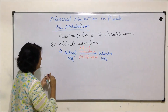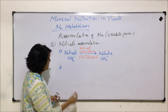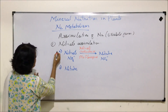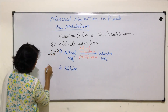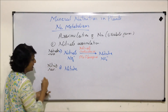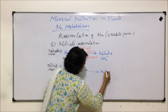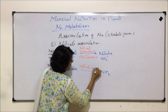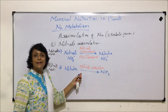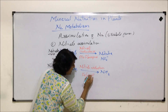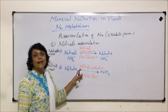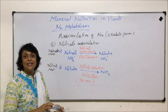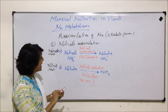Sub-step 2 is nitrite reduction - nitrite is reduced into ammonia. The enzyme which helps here is known as nitrite reductase. This nitrite reductase is an iron and copper containing protein, without molybdenum. So there is no molybdenum in this particular enzyme.